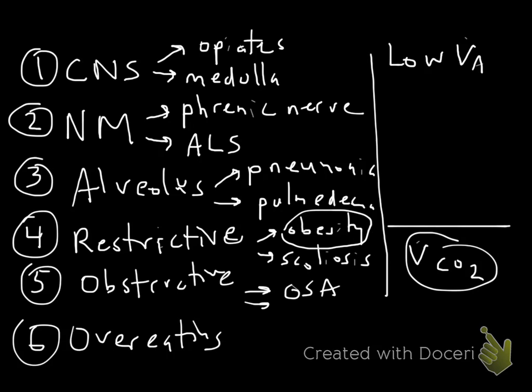Again, the two cases where you might see this are in someone who has one of these other problems related to a low alveolar ventilation, and then also has binging on carbohydrates. However, you can also see this in ventilated patients who may be at the limits of what the ventilator can do to allow them to eliminate carbon dioxide, and they may be on a high carbohydrate diet through tube feeding. So it's important to keep that in mind in the patient who's in the critical care setting.